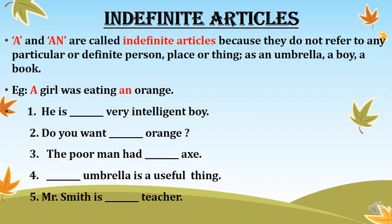Indefinite articles: 'a' and 'an' are called indefinite articles because they do not refer to any particular or definite person, place or thing — for example, an umbrella, a boy, a book. We are not talking about any particular boy or book. For instance: 'A girl was eating an orange.' We are not referring to any particular girl or orange, so we use 'a' before girl and 'an' before orange.